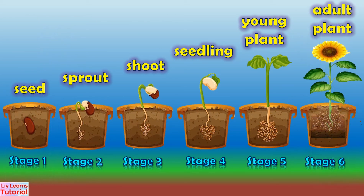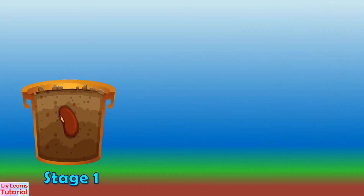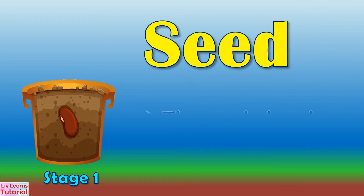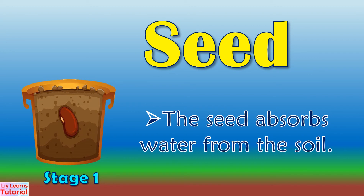Let's name the different stages of seed growth. Stage 1: Seed. This is the seed that is sown in the soil to absorb water.